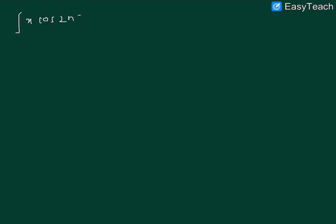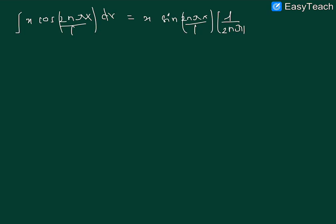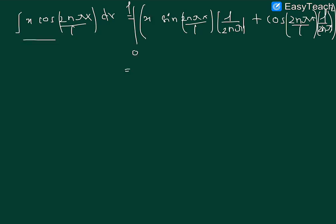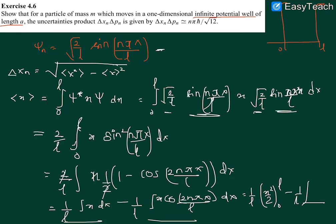The value of the integral of x cos(2n pi x over L) dx, evaluated by the product rule (integration by parts), is x sin(2n pi x over L) times (L over 2n pi), plus cos(2n pi x over L) times (L over 2n pi) squared, evaluated from zero to L. Substituting the boundary limits, this evaluates to zero. Therefore, the mean of x is L over 2.